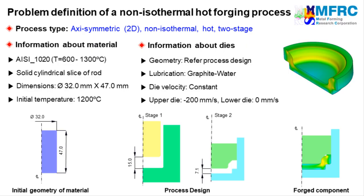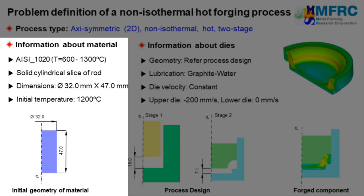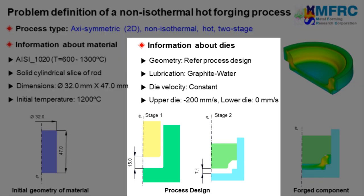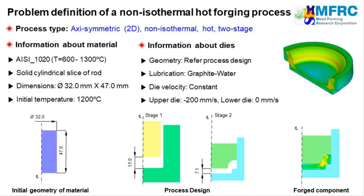The information about the material is given on the left side. The dimensions of the workpiece are as shown in the figure on the left. The material of the workpiece is a steel grade and its initial temperature is 1200 degrees Celsius. The final configurations of each stage of the dies are as shown in the picture. Graphite water is used as a lubricant. A constant velocity condition will be used — the upper die moves downward at 200 mm per second and the lower die remains stationary. The problem definition is complete.